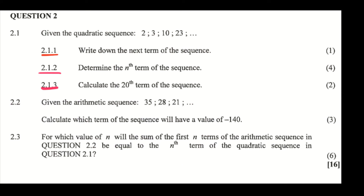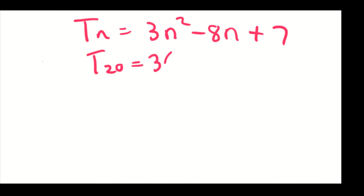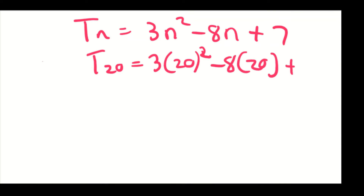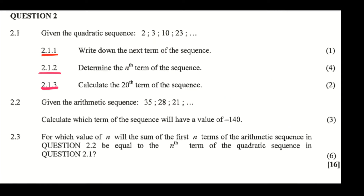For 2.1.3, we must calculate the 20th term. Using Tn = 3n² − 8n + 7, we get T20 = 3(20²) − 8(20) + 7, which gives an answer of 1041.